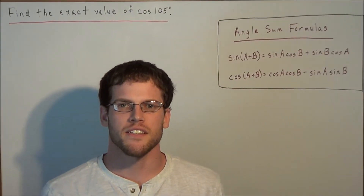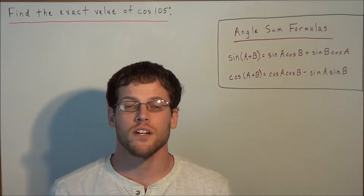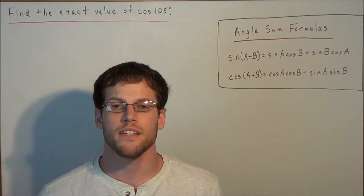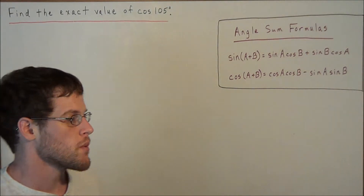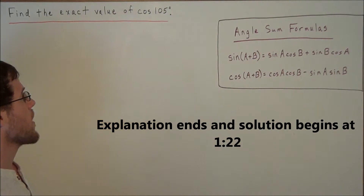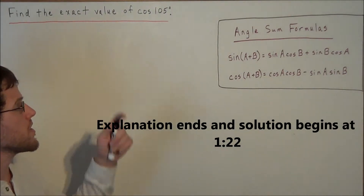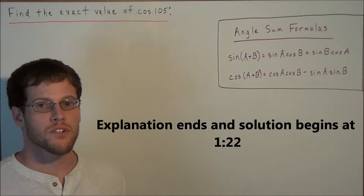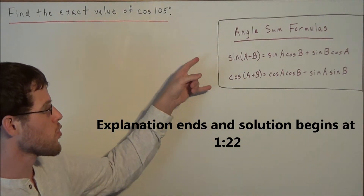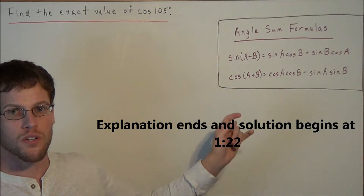Hi, my name is Vincent, and today I want to take a look at using the angle sum identities. So we have the problem: find the exact value of cosine of 105 degrees, and we have these two formulas available to us.